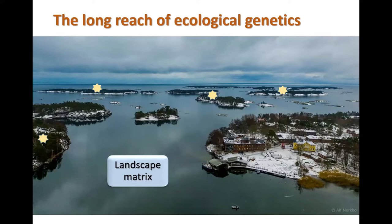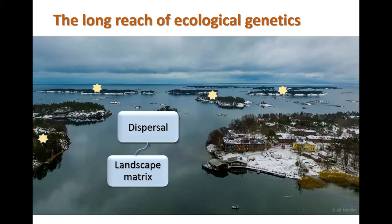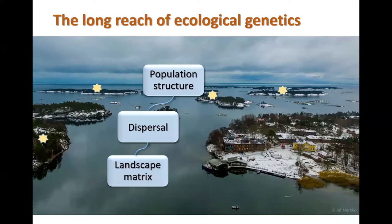One core factor here is dispersal. How do ants disperse between islands, and initially to the islands in the first place? Because these islands are reasonably young — we have land rise in Finland, so they might be just a few hundred years old in terms of being habitable for ants. This is a crucial factor which is going to shape population structure.